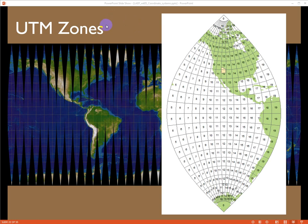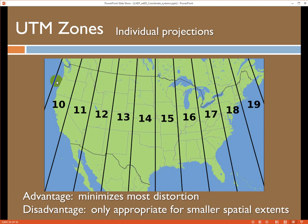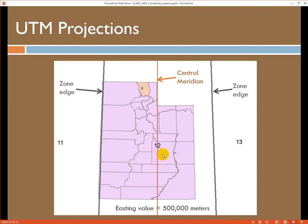So that's what a UTM zone looks like and kind of why we use them. The advantage is it minimizes most of the distortion we see with projections. The problem is it only works in small spatial extents. You can't calculate distances in UTM from Nevada to Wisconsin — it just doesn't work. You'd have to go to a continental U.S. projection to do something like that.